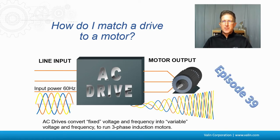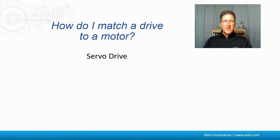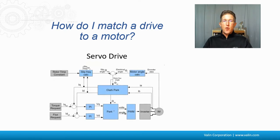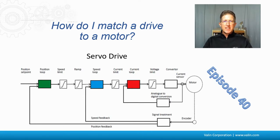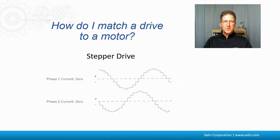I talk about that in episode 39. Then there are servo drives, which do a whole lot more — discussed in episode 40. Typically it looks like this, where there are three different servo loops: the current loop, the speed loop, the position loop, and a number of other calculations in there. Again, that's episode 40, at least to talk about servo motors.